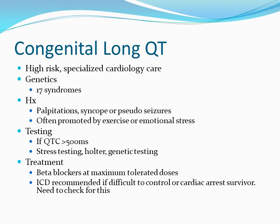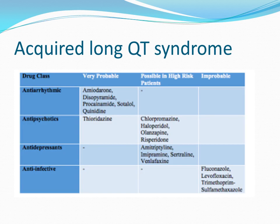The rest of this podcast gives more information about the complicated topic of long QT syndromes that often comes up in VIVAs. Congenital long QT syndromes are high risk and require specialist cardiology care. They present as syncope, palpitations, or pseudo-seizures, often brought about by increased sympathetic tone from exercise or emotional stress. The mainstay of treatment is beta blockers at maximum tolerated doses. An ICD is recommended if symptoms are difficult to control or the patient is a cardiac arrest survivor. Acquired long QT syndrome can be caused by drugs, electrolyte disturbance, anorexia nervosa, or severe neurological injury.